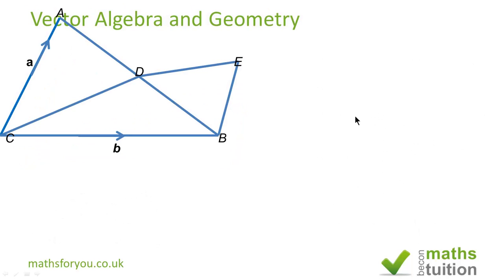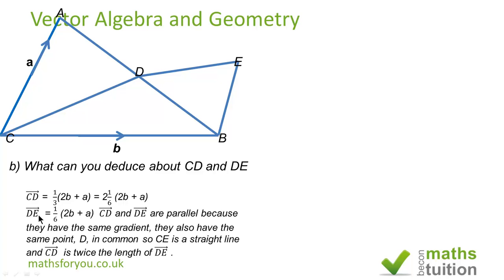Right, from the last slide it says what can you deduce about CD and DE. We know that the vector CD is 1 third into (2b plus a), which is the same as saying 2 times 1 sixth into (2b plus a) because 2 sixths is 1 third. We also know that DE is 1 sixth into (2b plus a), so CD and DE are parallel.